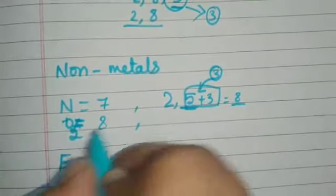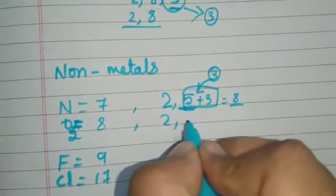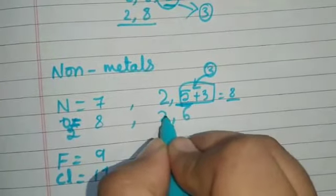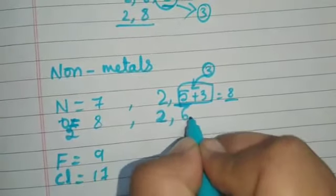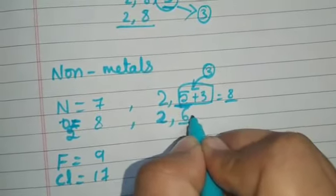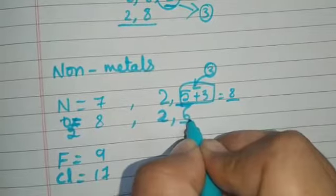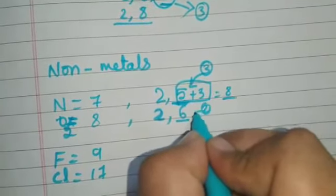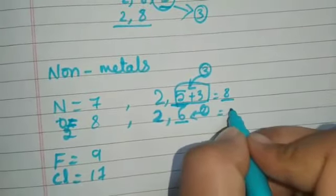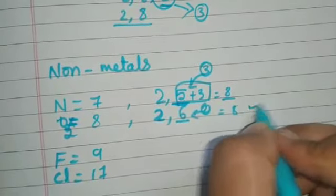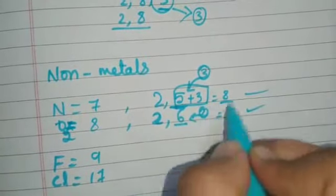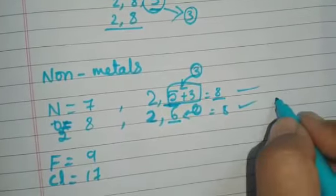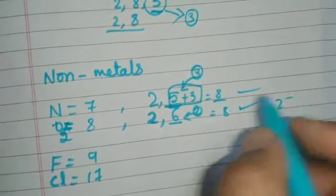If you take oxygen, its configuration is 2 and 6. To complete the octet structure it requires two more electrons. Oxygen gains two electrons and becomes eight — the outermost shell becomes completely filled. Since it gained electrons, it gets a 2 minus charge.